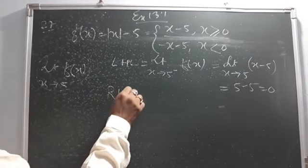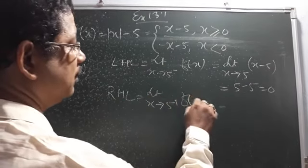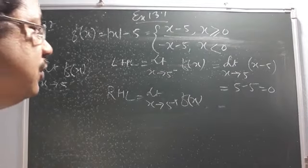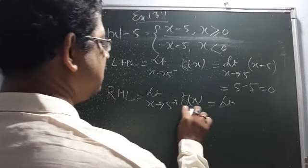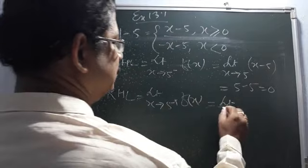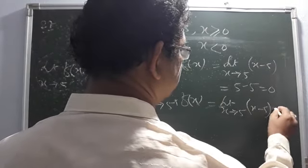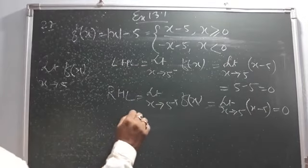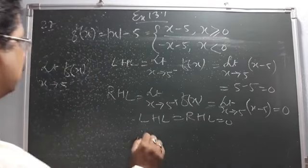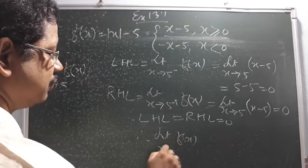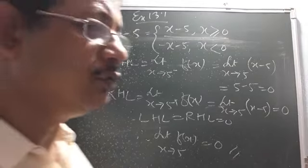Now right hand limit — x tends to 5 plus means x is a little bit bigger than 5. If x is a little bigger than 5, it is still greater than 0, so we use f(x) = x − 5. Applying the limit: 5 − 5 = 0. Therefore, LHL = RHL = 0. Therefore, limit of f(x) as x tends to 5 is equal to 0.